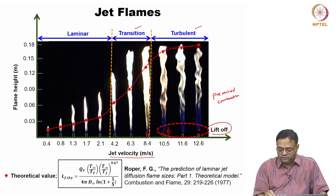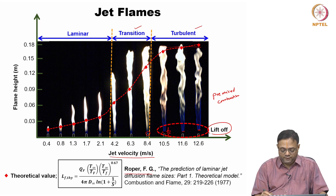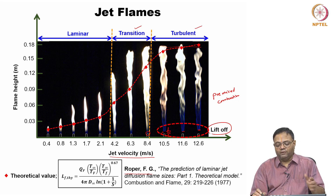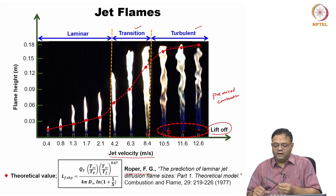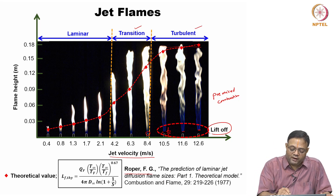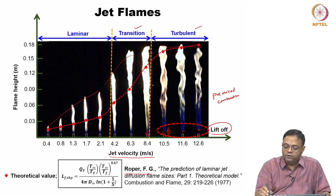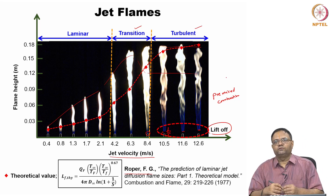This is from Roper's experimental study. Theoretical predictions are somewhat off due to uncertainty in flame length and oscillations. In summary: in the laminar regime, flame height increases; it reaches a maximum in the transition regime; in the turbulent regime, it drops to a nearly constant value. This is observed for several fuels.